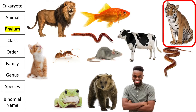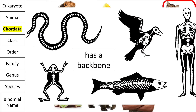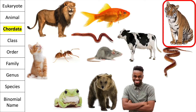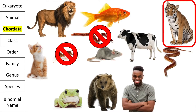Which phylum does the tiger belong to? Well, it has a backbone so it belongs to the phylum Chordata. Anything belonging to the phylum Chordata has a backbone, so that means we can get rid of the worm and the ant because they don't have a backbone.